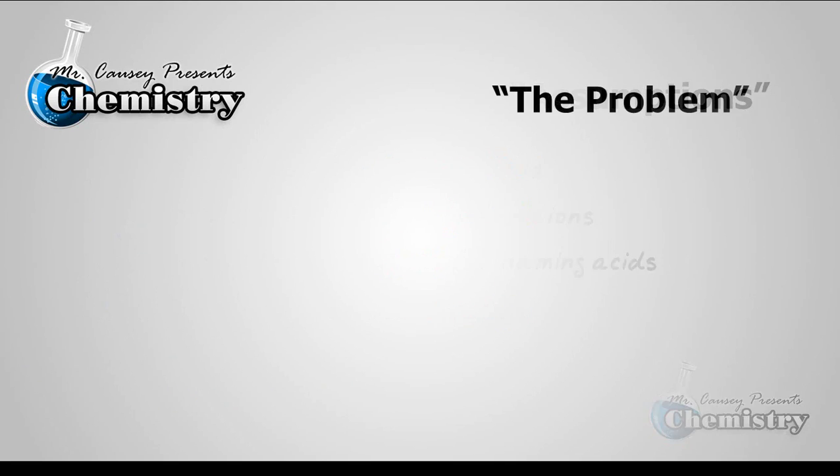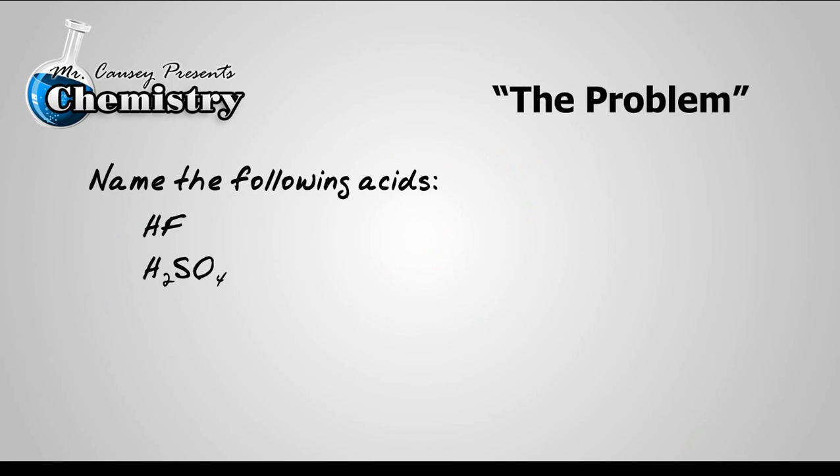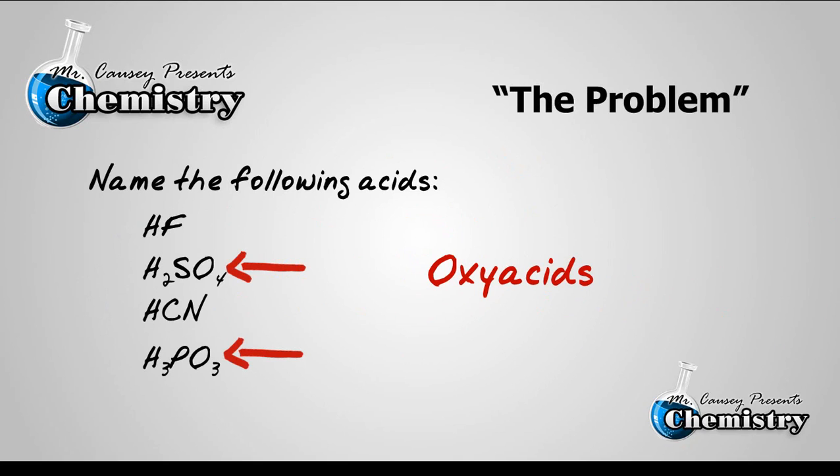All right, the problem. Name the following acids. Now the first thing you do when you want to name an acid is you determine what kind of acid it is. There are basically two kinds of acids: binary acids and oxyacids. If you'll notice that HF and HCN are binary acids and H2SO4 and H3PO3 are oxyacids. So let's go to the magic blackboard and name them.